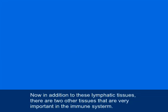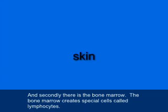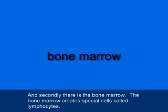In addition to these lymphatic tissues, there are two other tissues that are very important in the immune system. First, there's the skin, because the skin provides a physical barrier against any invading organisms. And secondly, there's the bone marrow, which creates special cells called lymphocytes.